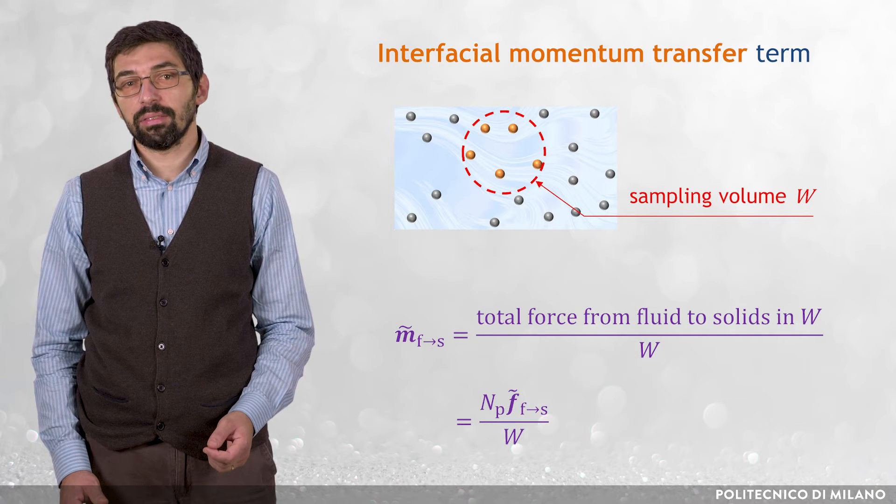If we take k as the solid phase s, then tilde m from f to s represents the total force exerted by the fluid on the particles in the sampling volume W divided by W. This term is expressed as the product of the number of particles in the sampling volume, n p, and the characteristic average force acting on each particle, tilde f from f to s divided by W.